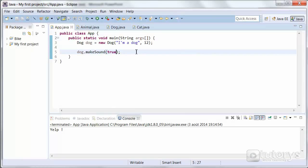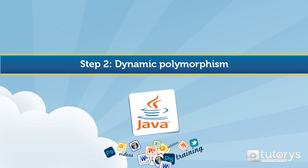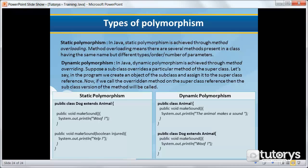In the next step, we'll be seeing how to use dynamic polymorphism in Java. This brings us to the second type of polymorphism, which is known as dynamic polymorphism. You already know everything about it because this is the type we used in the previous video on how to apply polymorphism in Java, so I'm not going to go into detail. In Java, dynamic polymorphism is achieved through method overriding — a subclass overrides a particular method of the superclass.